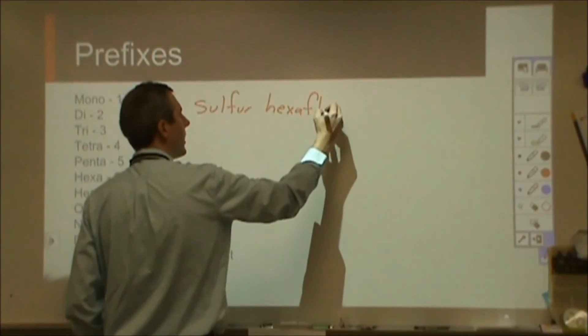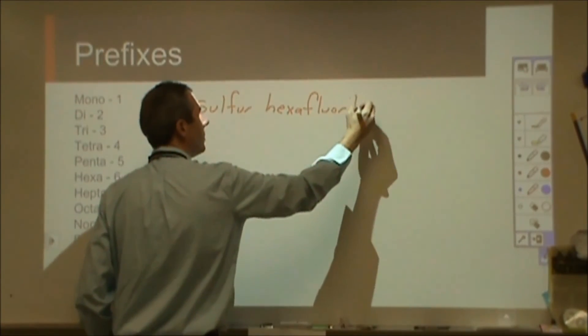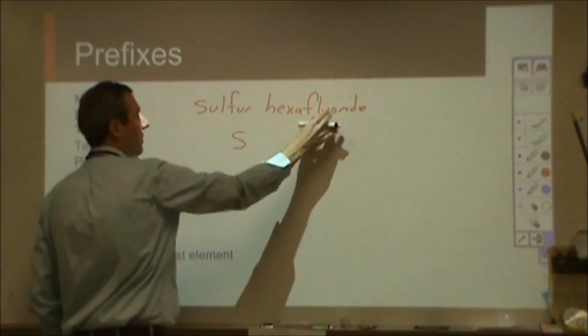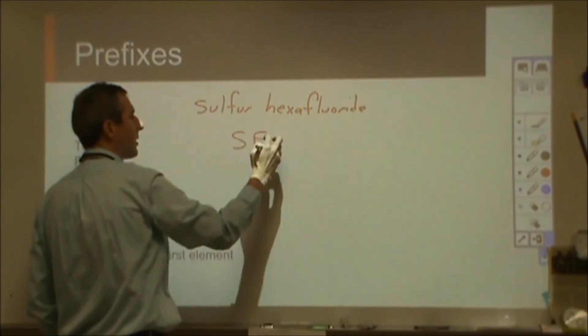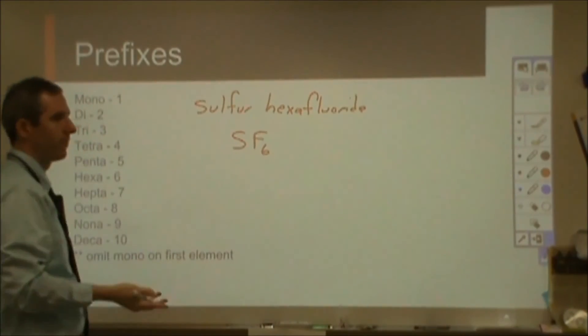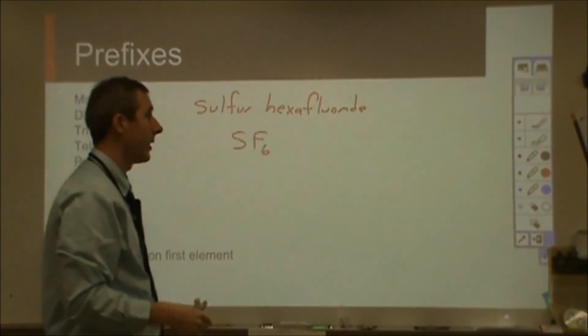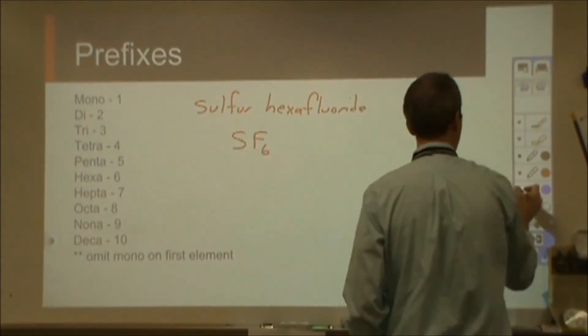So sulfur hexafluoride is a really cool chemical that you can breathe in and makes your voice sound deeper. It's just going to be sulfur and fluorine, and there would be six fluorines for each sulfur. So the mono is omitted here, so you would just have one. And then that would be SF6.